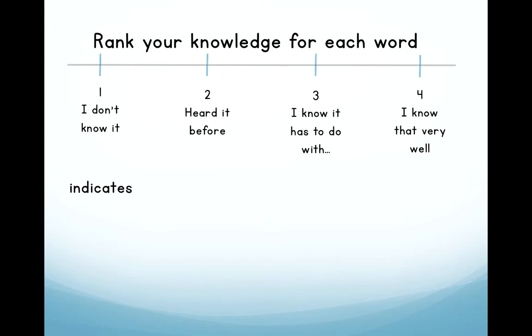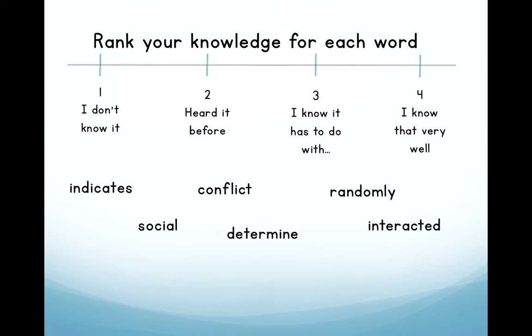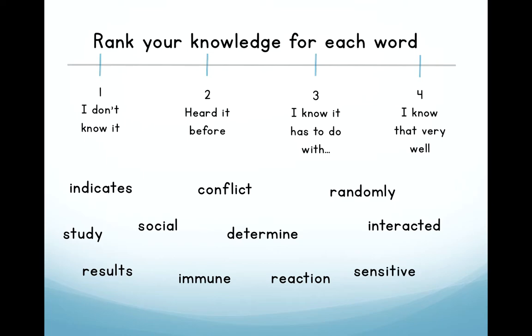The first word is 'indicates.' How well do you know that word — one, two, three, or four? 'Social.' How well do you know that word? 'Randomly.' 'Interacted.' 'Determine.' 'Study.' 'Results.' 'Immune.' 'Reaction.' 'Sensitive.' Now the last three words — immune, reaction, and sensitive — are the three new words from our passage about allergies. How well do you know our three new words?